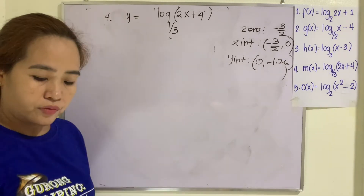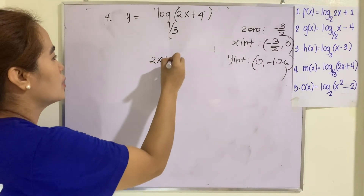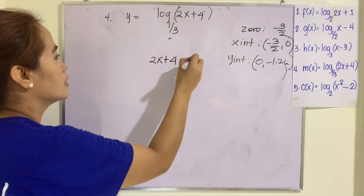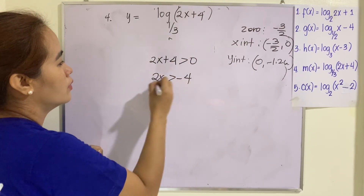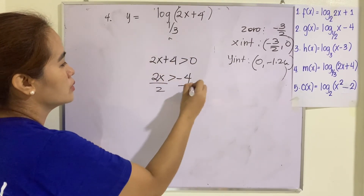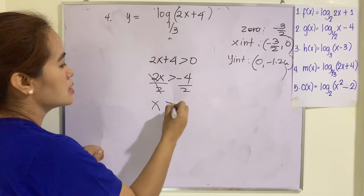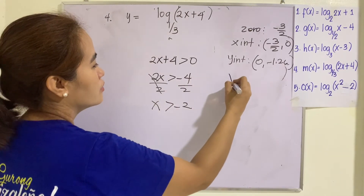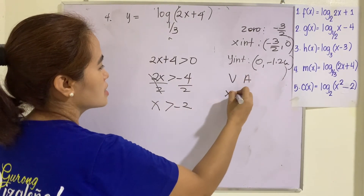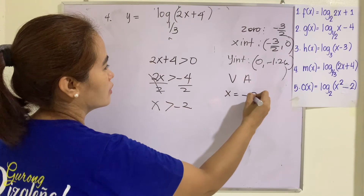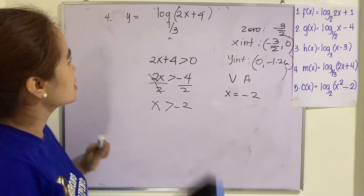For the vertical asymptote: 2x plus 4 must be greater than 0, so 2x is greater than negative 4, giving x greater than negative 2. Therefore the vertical asymptote is x equals negative 2.